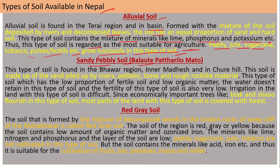The second is sandy and pebbly soil — known locally as Baluat Pathrilo Mato. This type of soil is found in the Bhabar region, Inner valleys, and Churia Hills. It is made up of land piled up by rivers, pebbles, and loose rough rocky materials. This soil has low proportions of fertile soil and low organic matter, and water does not retain in it, so its fertility is very low.